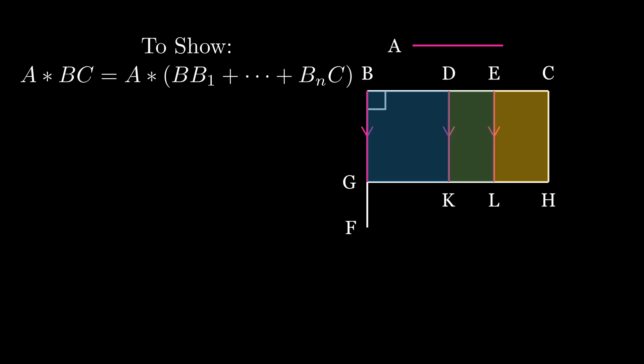Now in algebraic terms, what we've shown is that A times BC is equal to A times BD plus A times DE plus A times EC, the distributive property of multiplication.